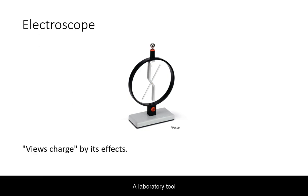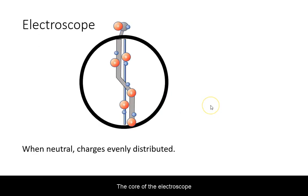A laboratory tool you will use to view the electrostatic force through its effects is known as an electroscope. The core of the electroscope consists of conducting material, initially neutral, that can have charges flow to or from it through the bob at the top. At the center, it is connected to a loose rod that too is electrically conductive.